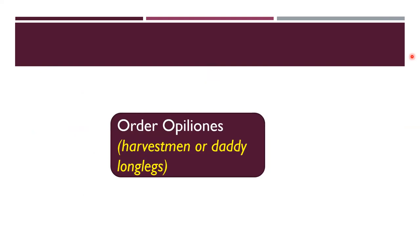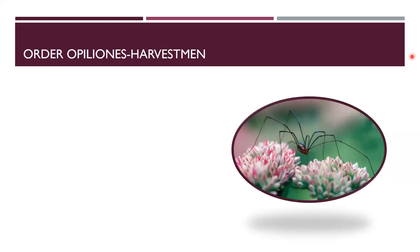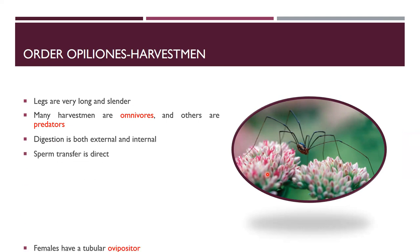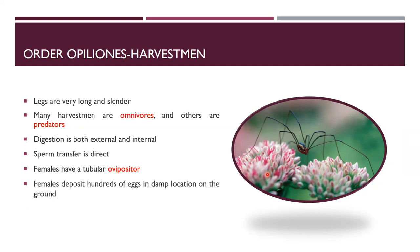Order Opiliones includes harvestmen or daddy long legs. They have very long legs. They feed on plants, animals, and are also predators. Digestion can be external or internal. Sperm transfer is direct. Females have a tubular ovipositor and deposit hundreds of eggs in damp locations.